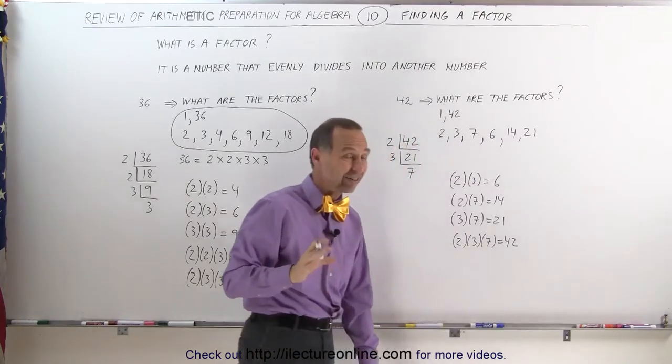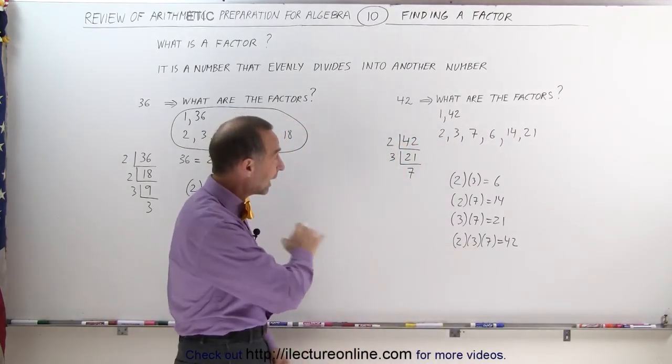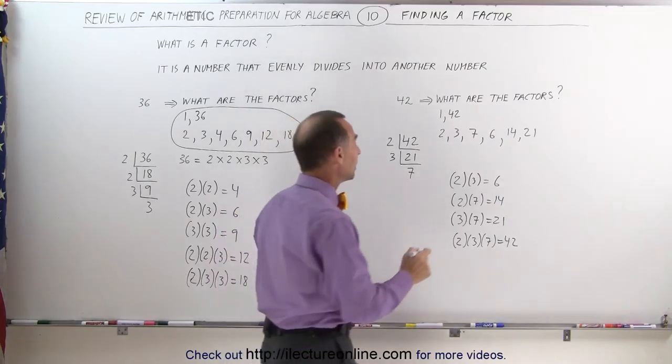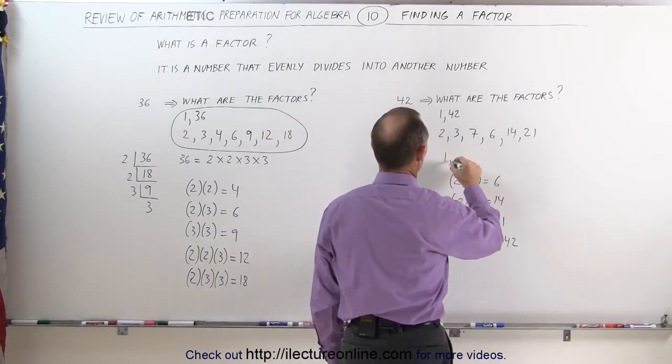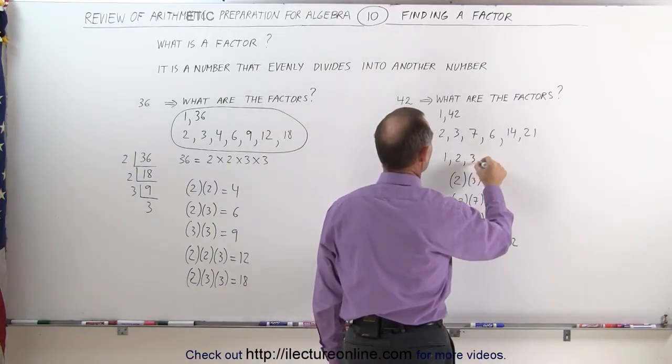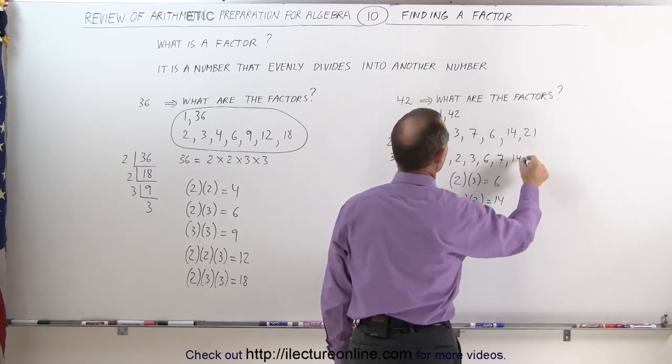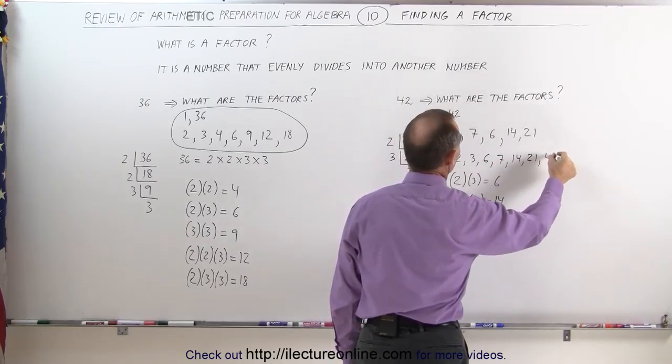Now, again, to check to see if we found all the factors, let's write them lined up from smallest to largest and see what we get. 1, 2, 3, 6, 7, 14, 21, and 42. These should be all of the factors of 42.